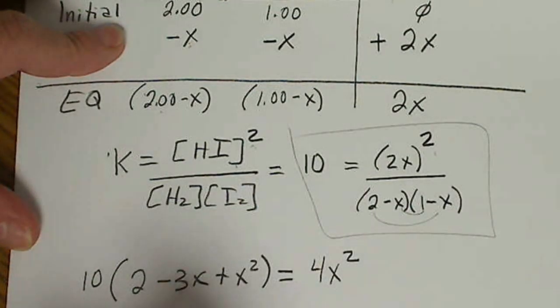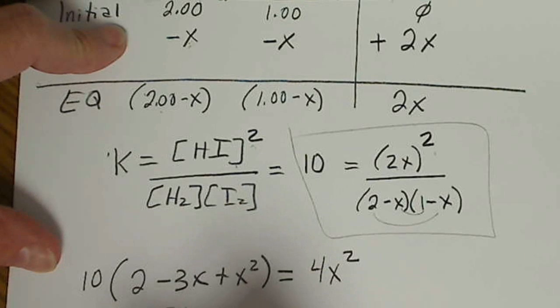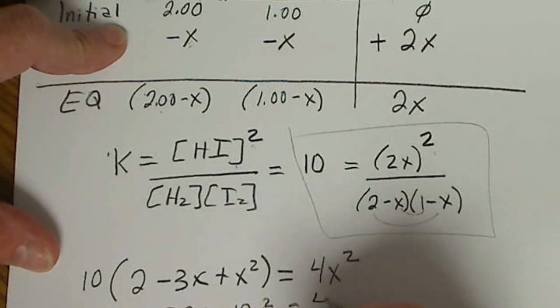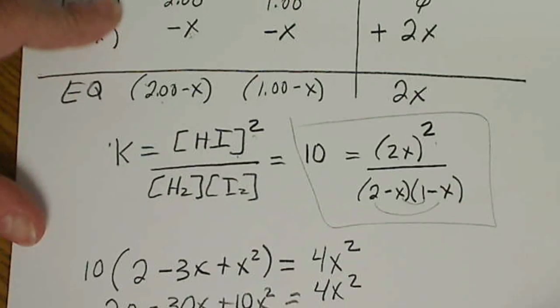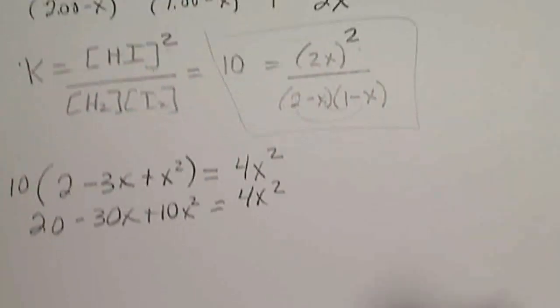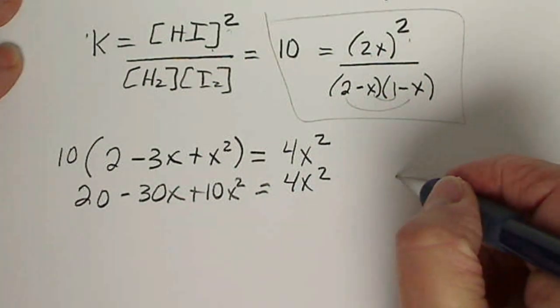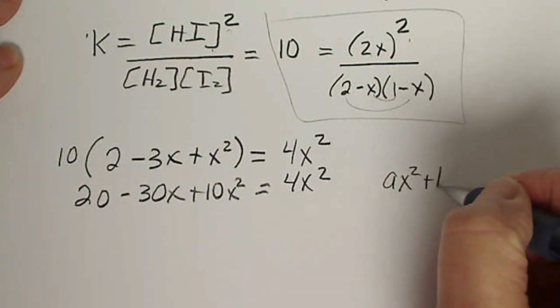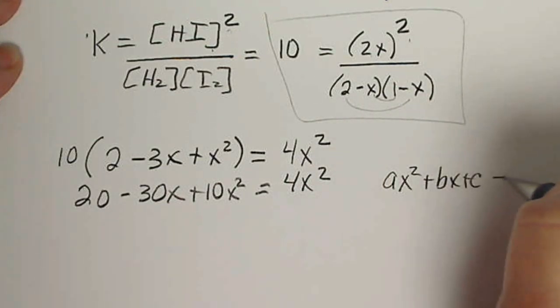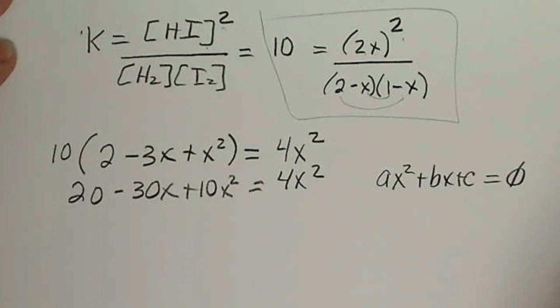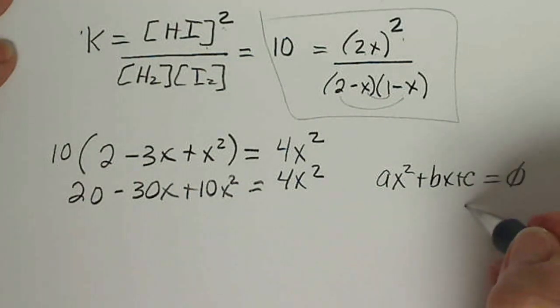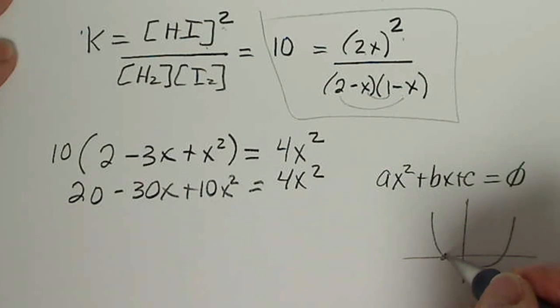That's all equal to 2X quantity squared is 4X squared. And if I distribute this, 20 minus 30X plus 10X squared is equal to 4X squared. And in order to solve this, I'm going to get this in the form AX squared plus BX plus C and set that equal to 0.